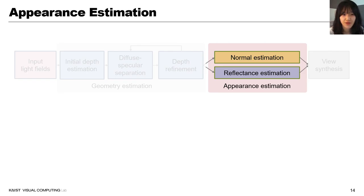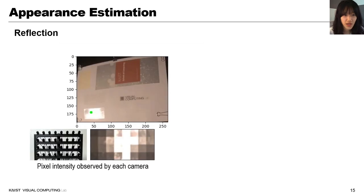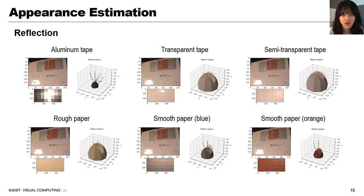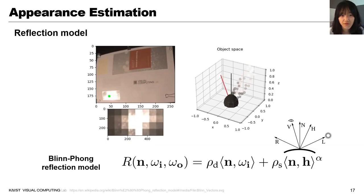Based on the estimated geometry, we begin with inverse rendering that includes normal and reflectance estimation. This figure shows aluminum tape on a plate and pixel intensities at the green dot location captured by each camera in a grid of 4x8. Plotting the pixel intensities in object space shows the reflection distribution of the aluminum tape. The reflection distributions differ by surface roughness of materials.